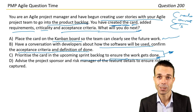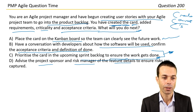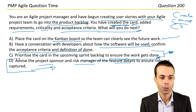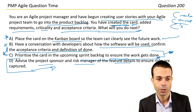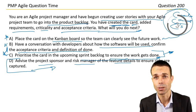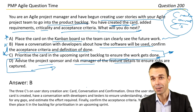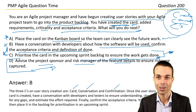Let's rule out advising the project sponsor and risk manager — that's a separate process. Between having the conversation and prioritizing the card, if we look at the three Cs of user story creation — card, conversation, and confirmation — we've created the card. So next is the conversation with developers about how the software will be used, then confirm the acceptance criteria and definition of done. Answer B. After that, you can place it in the backlog for the upcoming sprint.